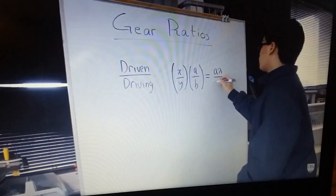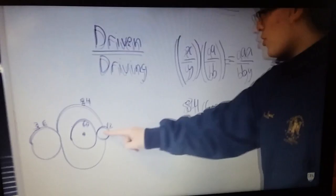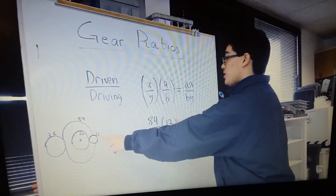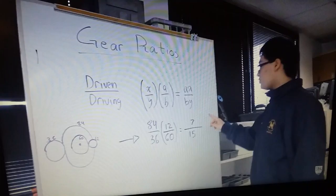In this real life example, I have a 36 tooth gear driving an 84 tooth gear, which is on the same axle as a 60 tooth gear, driving a 12 tooth gear. If I want to do the math for this, I will take the driven gear in the first gear ratio over the driving gear in the first gear ratio, and multiply that by the driven gear in the second gear ratio over the driving gear in the second gear ratio.